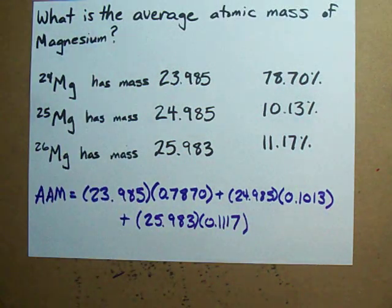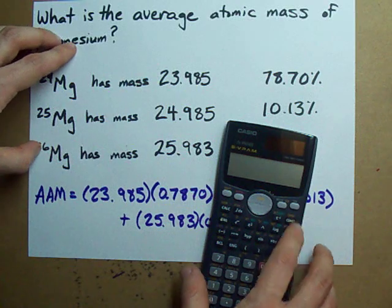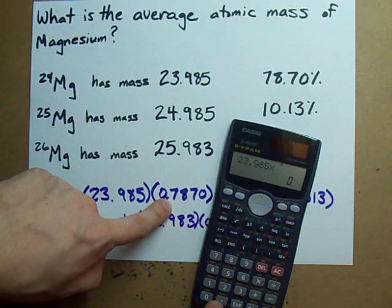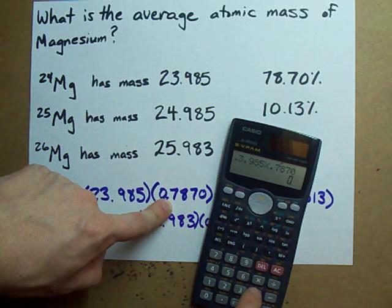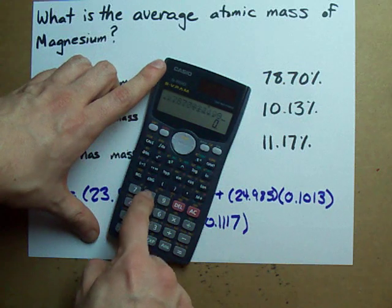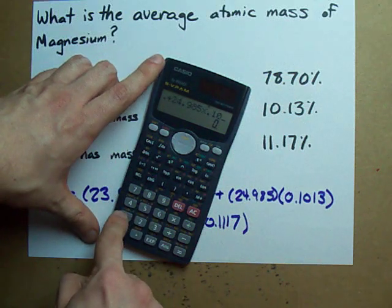Then you just whip out your calculator and you plug these numbers in. You add 23.985 times .7870 plus 24.985 times .1013.